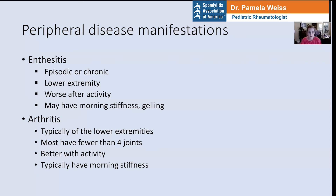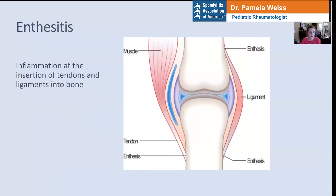Enthesitis and arthritis can occur at the same time, or they can also occur independent of each other. So your child might have arthritis that's very well controlled but enthesitis that's really causing a problem, or vice versa. Arthritis is almost always an inflammatory process. Enthesitis can be inflammatory and associated with spondyloarthritis, but it's also important to recognize that enthesitis happens in children without spondyloarthritis, and it can also happen from overuse injuries such as with high intensity sports.